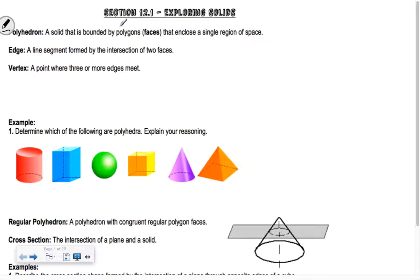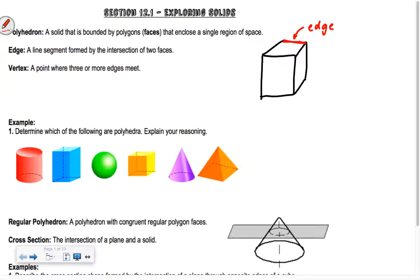Polyhedra can look like a prism — this would be called a rectangular prism. This would be an edge, and this would be a vertex. So for number one, it says determine which of the following are polyhedra. As we said, polyhedra have to be formed by polygons.